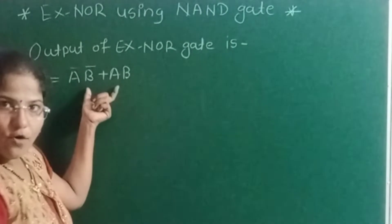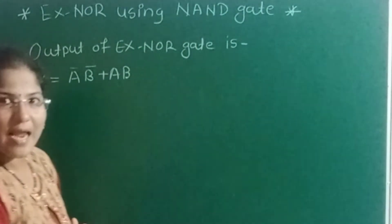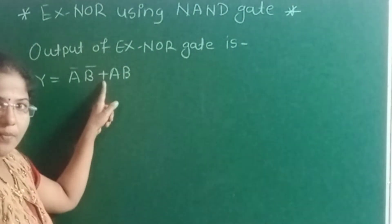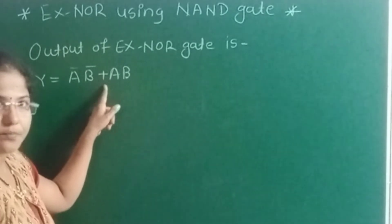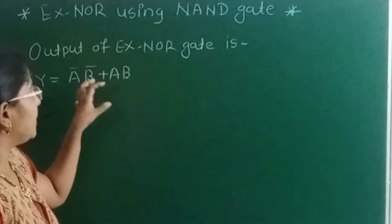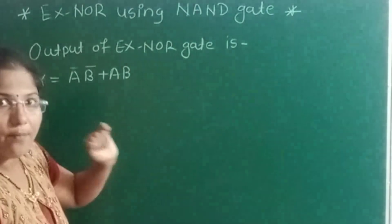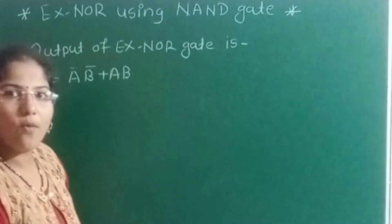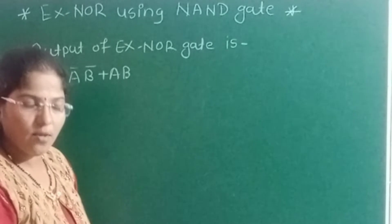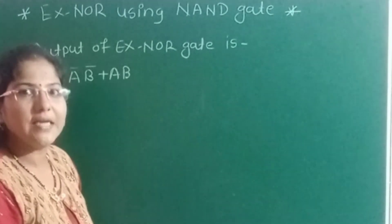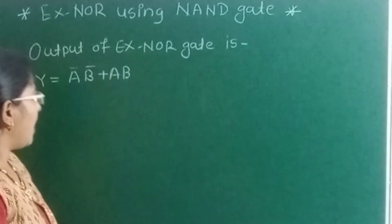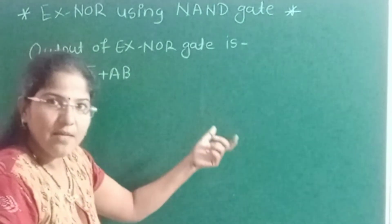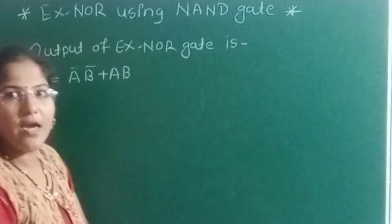I want to get this output by using the NAND gate. But you can see there is a plus symbol — this is an addition term. The output of the NAND gate is in the form of a multiplication product term and its complement, so I need to convert this addition term into multiplication and complement form.